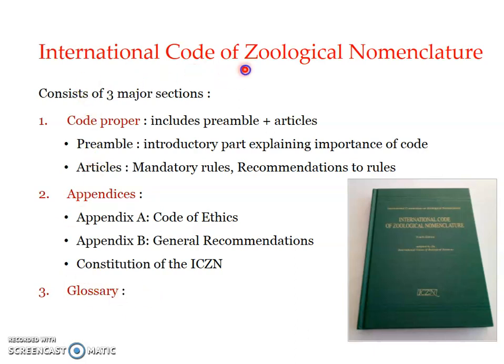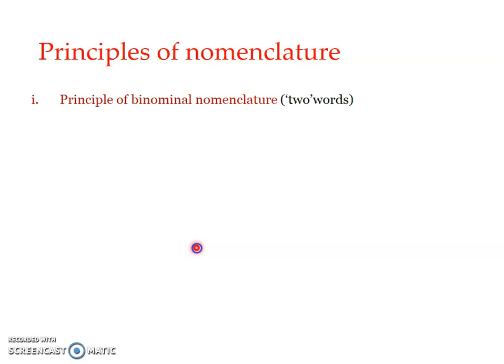Now, what are the principles or rules of nomenclature as per the ICZN? The first is the Principle of Binomial Nomenclature, which states that the name should be binomial — two words — and the two words should be Latin or at least Greek. If the name is taken from any other language, it must be latinized. It includes the generic name and the specific name. When printed, names should be in italics; when handwritten, they should be underlined.